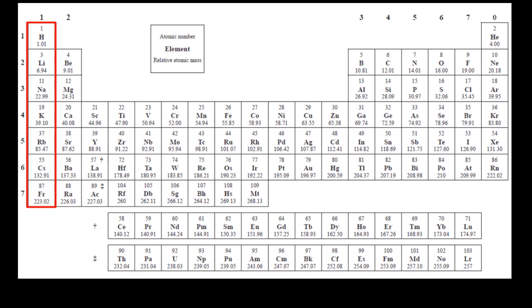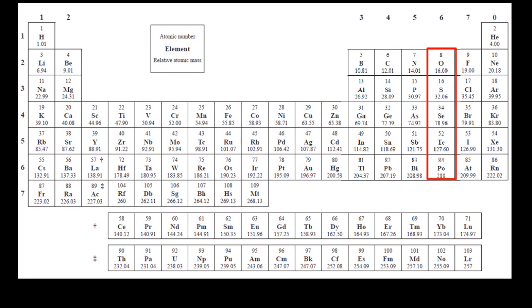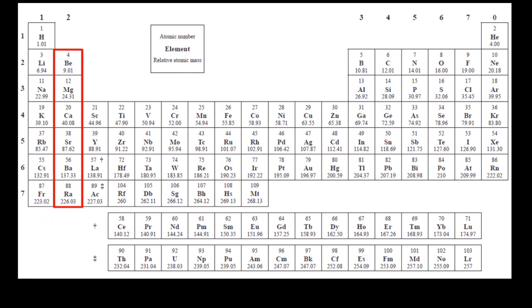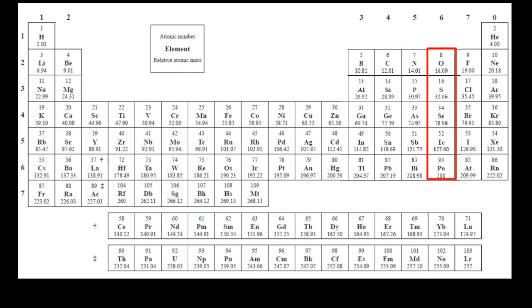So I'm going to highlight the groups. The groups are the vertical columns in the periodic table, and elements within a group behave in a similar fashion. An element, for example, in Group 2, all of them have two valence electrons, and it's the valence electrons, the outside electrons, that govern the chemical properties of an element. So that's why they behave in a similar fashion, because they have the same number of valence electrons.